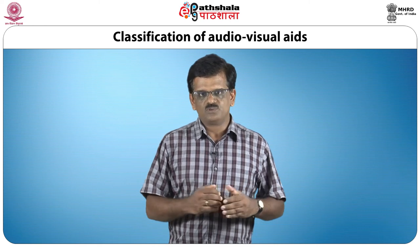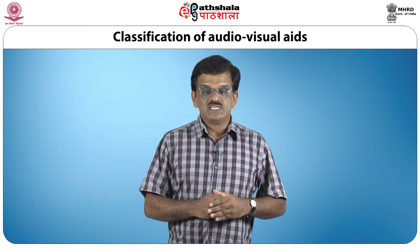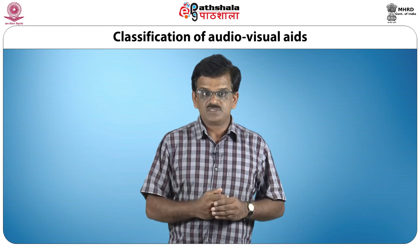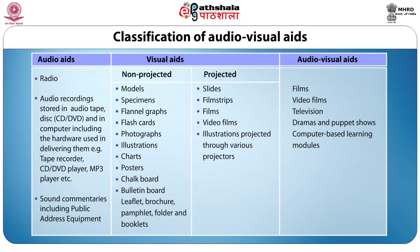Audiovisual aids transmit messages that can both be seen and heard. Various audiovisual aids are classified into three categories: audio aids — radio, audio recordings stored on CD or DVD; visual aids — non-projected aids such as models, specimens, flannel graphs, photographs, and projected aids such as film strips and slide projectors; and audiovisual aids which combine both audio and visual forms — such as motion pictures, video films, computer-based multimedia learning modules, dramas and puppet shows.